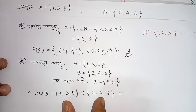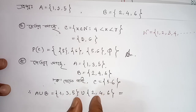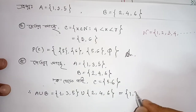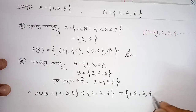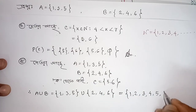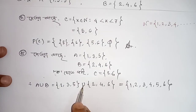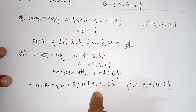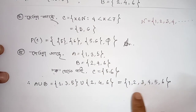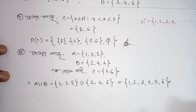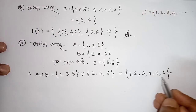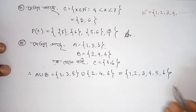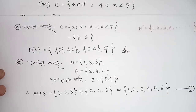Union means: take all elements from both sets together. Set union — take from the smallest to the largest. After that, write A, B, C, D and so on. We summarize this together.